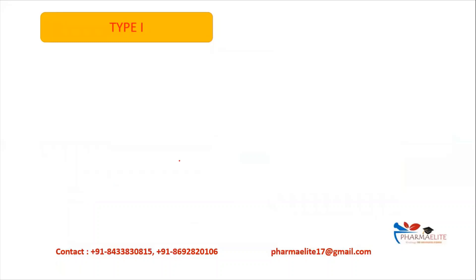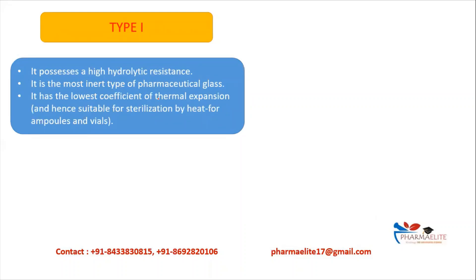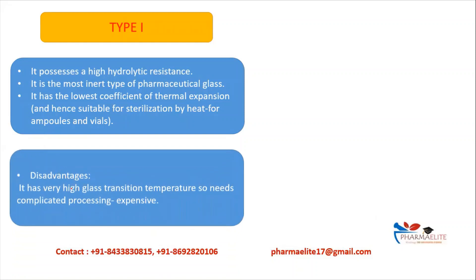Type 1 glass possesses high hydrolytic resistance and is the most inert type of pharmaceutical glass — it does not react with formulations. It has the lowest coefficient of thermal expansion, meaning it does not expand easily when heat is applied, making it very useful for sterilization by heat. Its disadvantage is a very high glass transition temperature, making processing complicated and expensive.